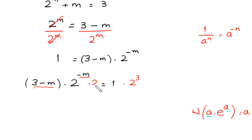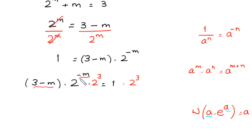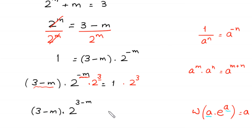At the left side we multiply by 2 to the power 3. Using the property a to the power m times a to the power n equals a to the power m plus n, we add the powers: negative m plus 3 gives 3 minus m. So this expression becomes 3 minus m times 2 to the power 3 minus m is equal to 8.